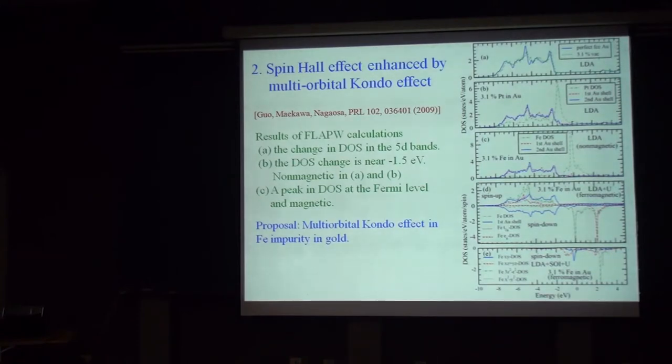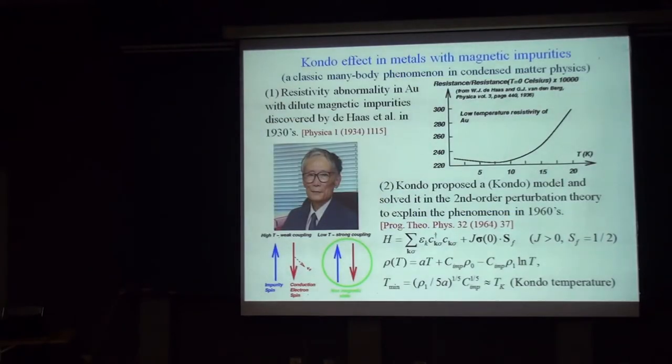Now, after we got this band structure, then we proposed that in the gold case, because of iron impurity, there may occur so-called multi-orbital Kondo effect. And the Kondo effect can give rise to very strong scattering. And that can give rise to spin Hall conductivity observed.